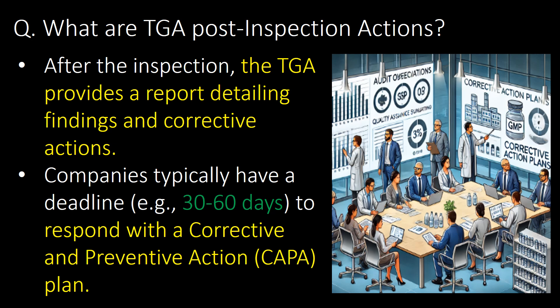What are TGA post-inspection actions? After the inspection, the TGA provides a report detailing findings and corrective actions. Companies typically have a deadline — for example, 30 to 60 days — to respond with a Corrective and Preventive Action, that is CAPA, plan.